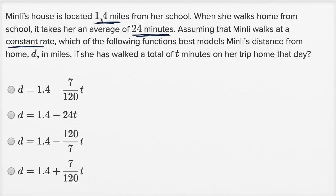we can figure that out because we know how far she walks in a certain amount of time. Which of the following functions best models Minley's distance from home, d, in miles, if she has walked a total of t minutes? So t is going to be in minutes, so all our units are going to be minutes and miles, and that's good because they gave us things in terms of minutes and miles. If this was in seconds or hours, we would have to do some conversion.